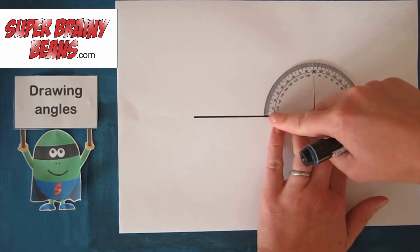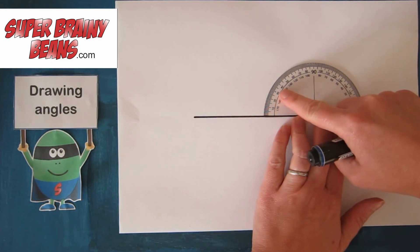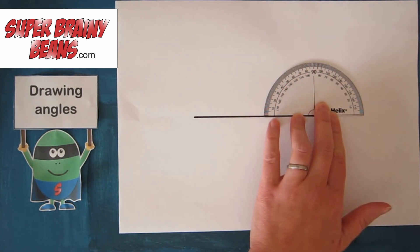So that's where zero is and you should see on your protractor it says 10, 20, 30, 40, 50, 60 and so on. So I'm going to make an angle of 60 degrees.